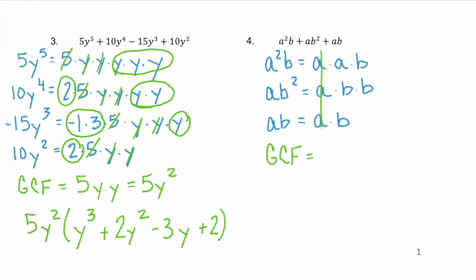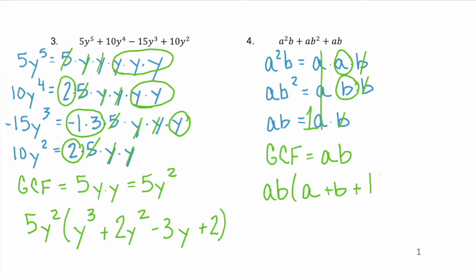Well, they all have an a and they all have a b. If we factor out that GCF of ab, the first term leaves behind an a, and the second term leaves behind a positive b. Now look at that third term — it looks like nothing got left behind, right? That's not true. Even if there isn't a coefficient in front of your variables, there's always the coefficient of 1. So what got left behind here is plus 1.